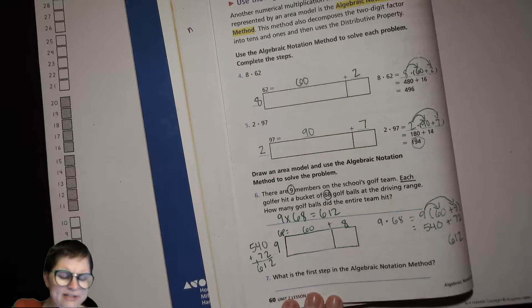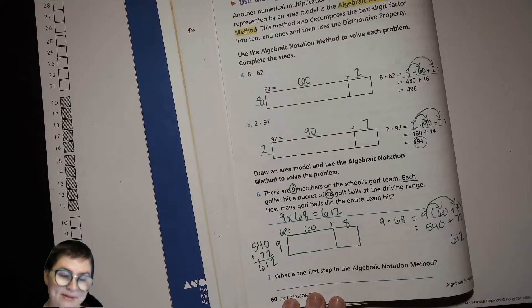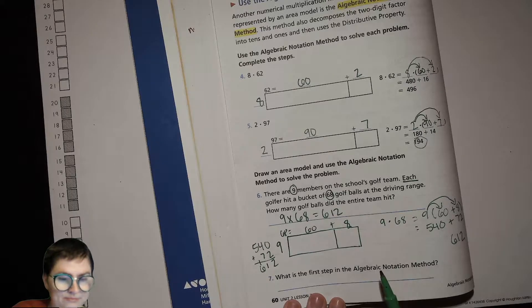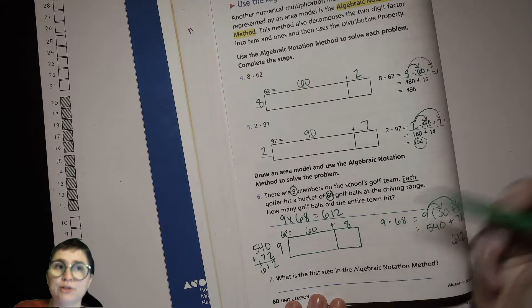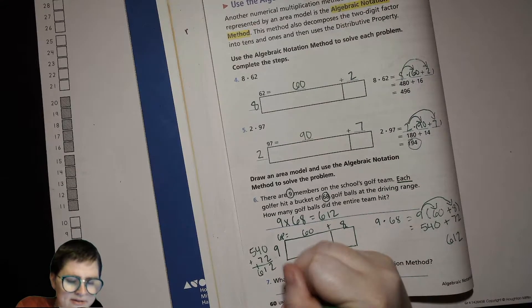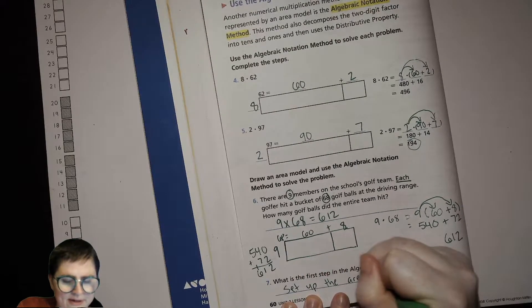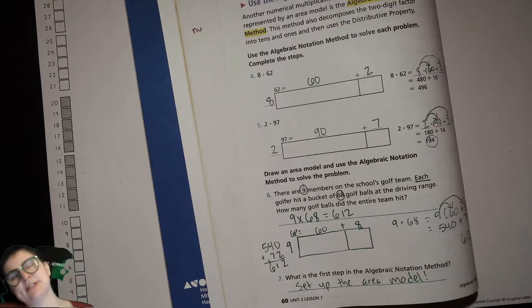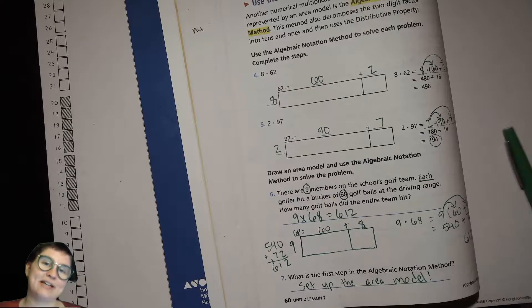What's the first step in the algebraic notation method? What do we do first here? We set up our picture, what's it called? The area model, right. Set up the area model.